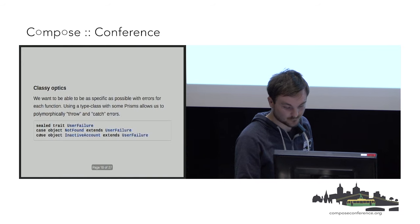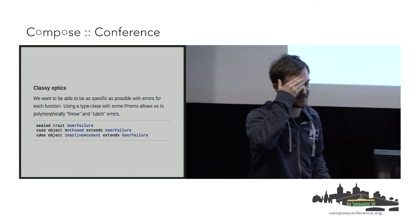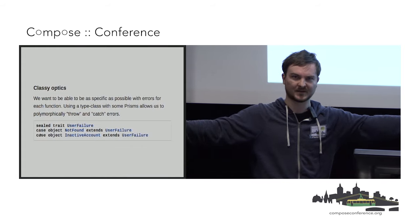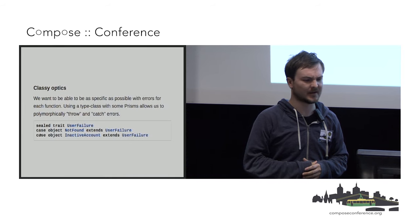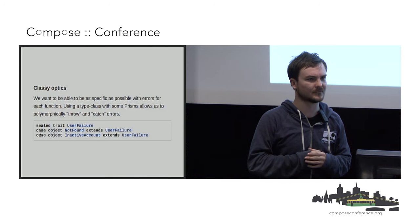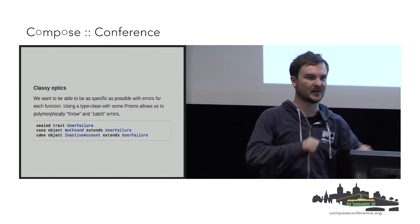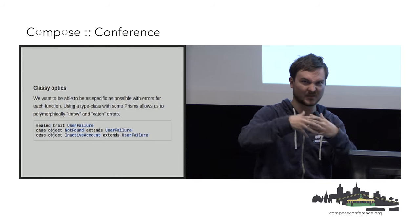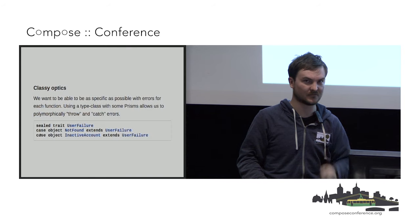In Scala, I worked on an application that had a lot of components — about 15 different components — and we wanted to keep errors separated. We didn't want just one big error type. We wanted to have errors for this component, errors for that component, and then just join them all together. Classy objects is a method for tackling that.